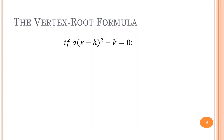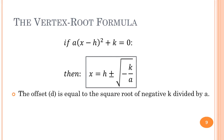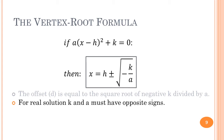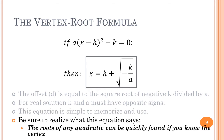It's time to introduce what we call the vertex root formula. Given a quadratic in vertex form, the roots are simply x equals h plus or minus d, which we found to be the square root of negative k divided by a. Notice that for a real solution, k and a must have opposite signs. See how simple this equation is to memorize — and you'll see how easy it is to use. Even though we derived it for a quadratic in vertex form, this equation will work with any quadratic: the roots of any quadratic can be quickly found if you know the vertex.